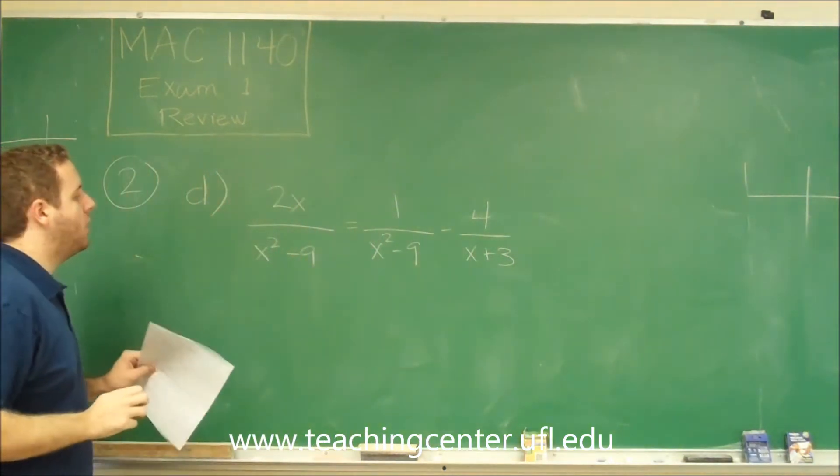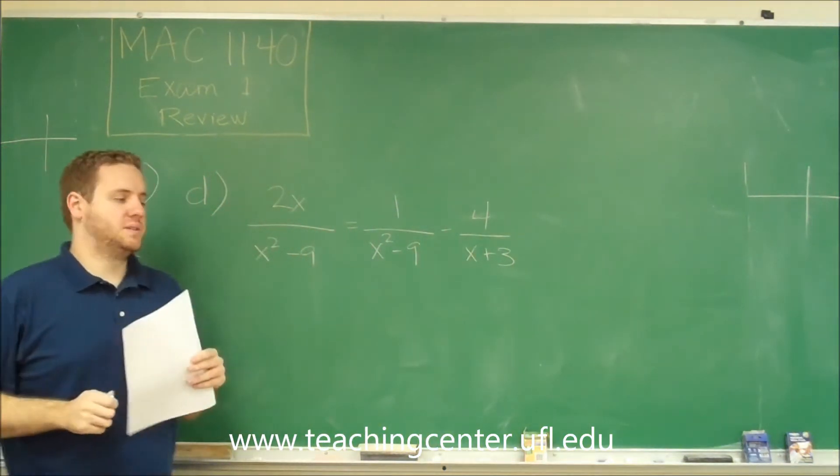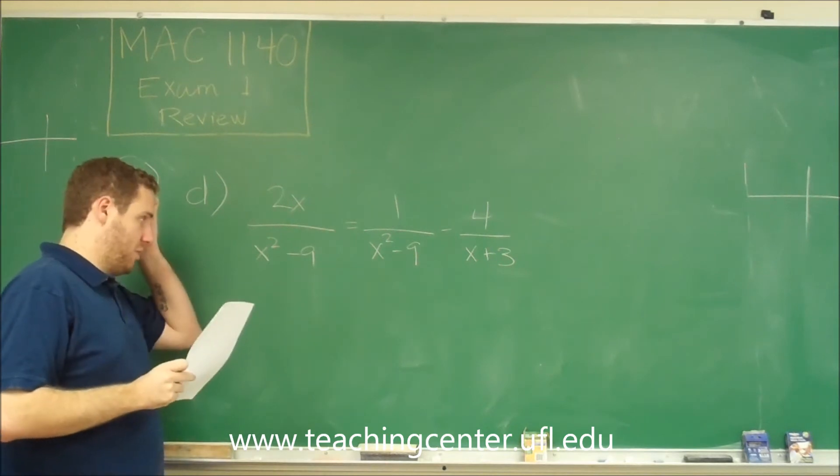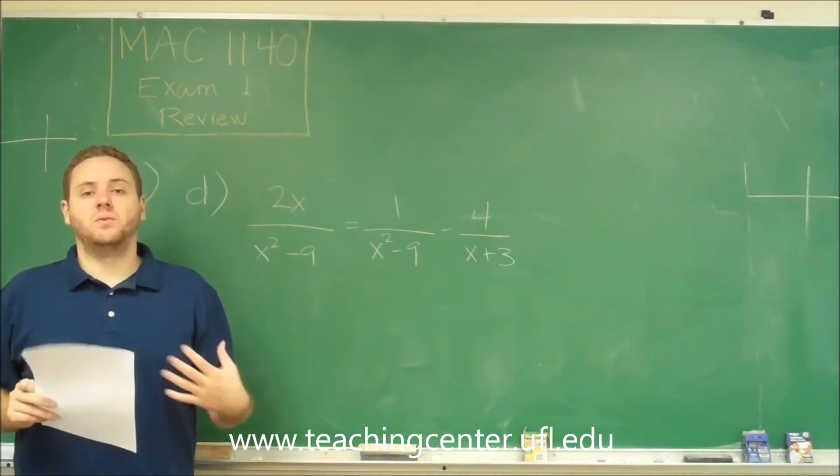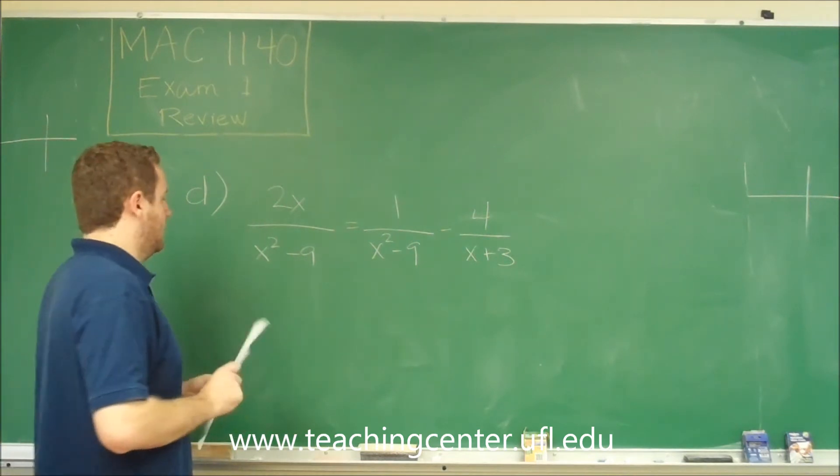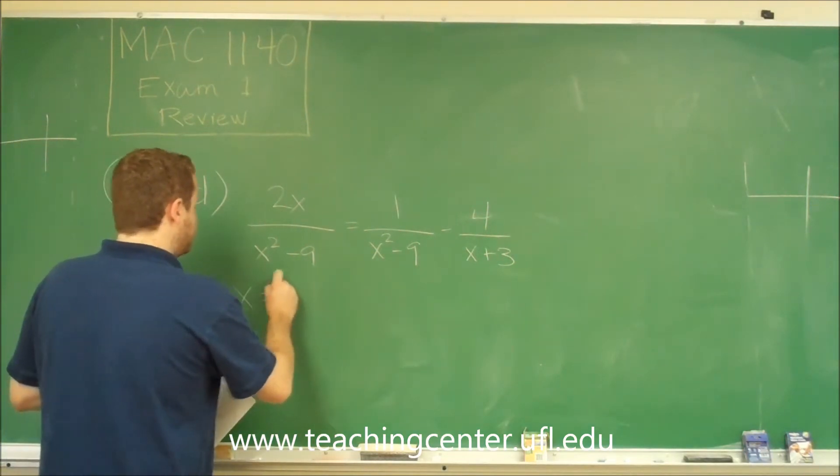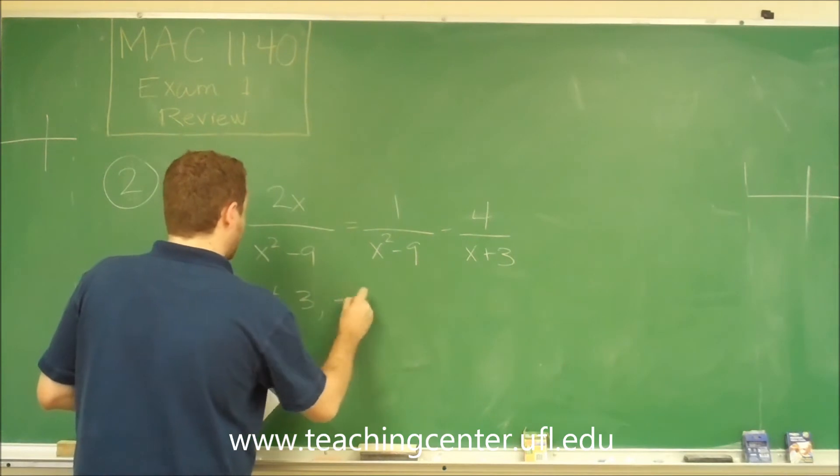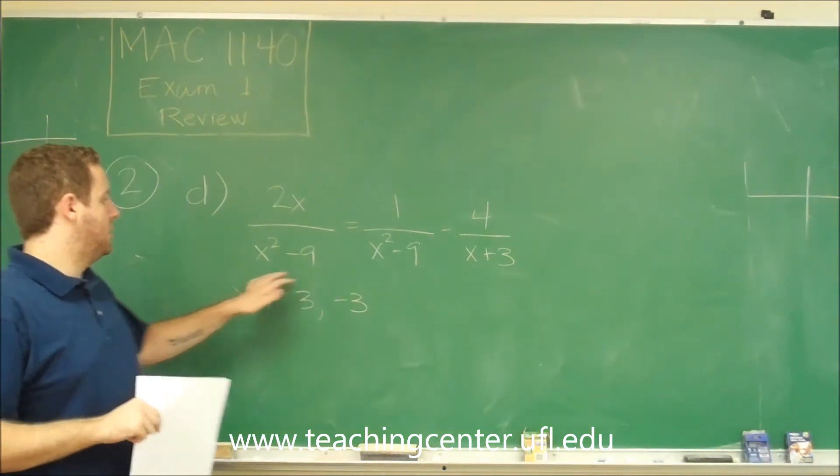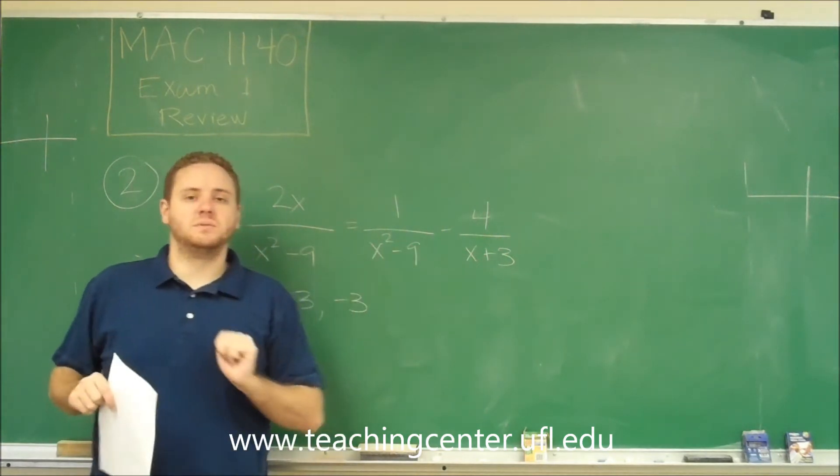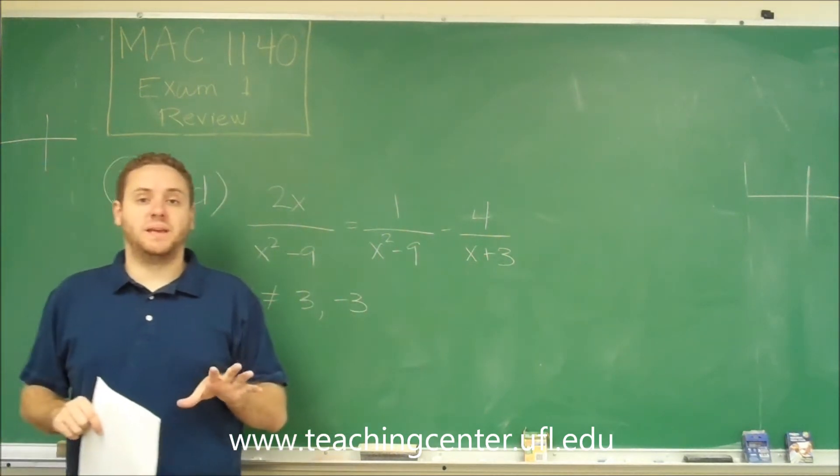Okay. So always the first thing that you should notice is we have variable expressions in our denominators we need to figure out what we can't have for x. In this case, x could not be 3 or negative 3 because that would make any of those denominators 0 and that's what we can't have.